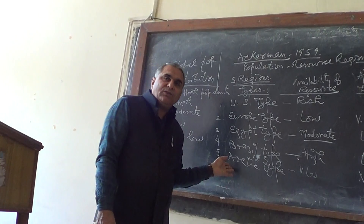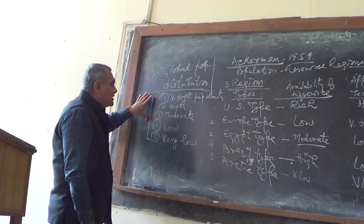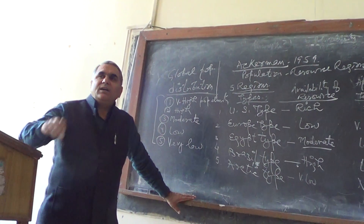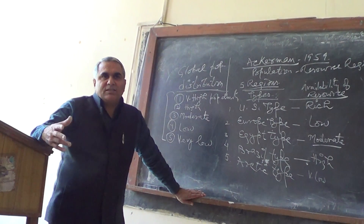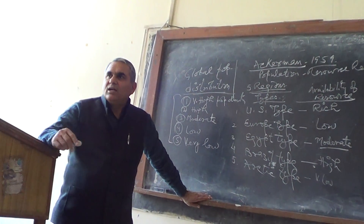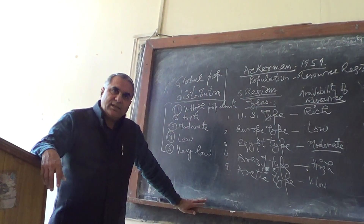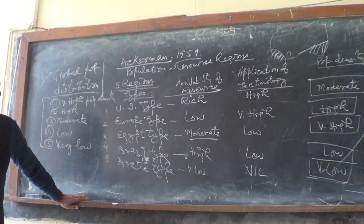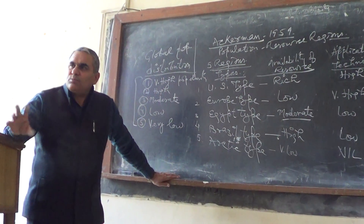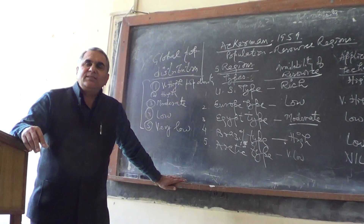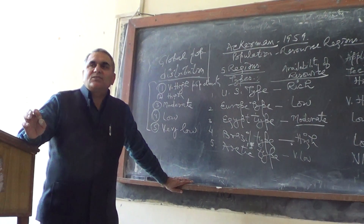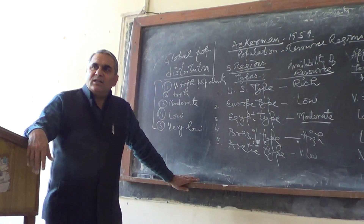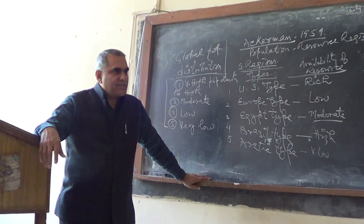Ackermann gave 5 types of regions, on the basis of which I classified 5 different types of population density regions in the world and discussed their distribution, parameters, and factors. In my next class, I will start the new topic — space and society — where man is responding differently in different regions. We will start with the cultural regions of the world, including race, religion, etc.